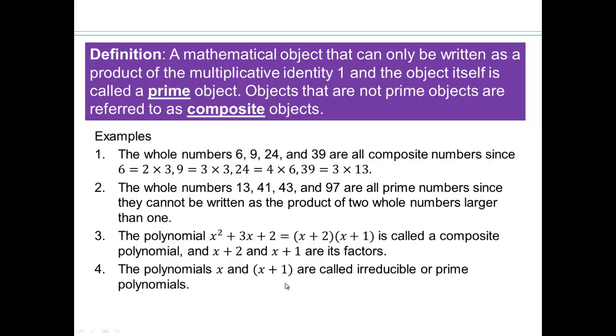x squared plus 3x plus 2 is a composite polynomial since it's product of these two polynomials. So here's more examples. x and x plus 1 are irreducible or prime polynomials because we cannot factor x any further. Similarly, x plus 1 can only be written as 1 times x plus 1.